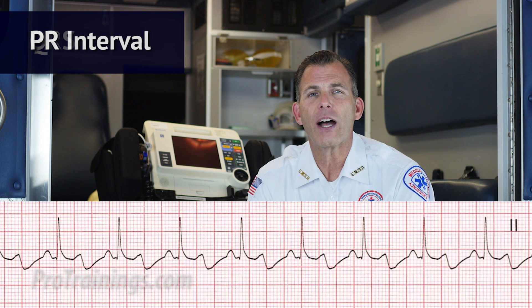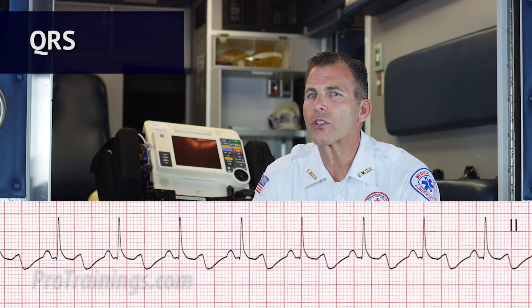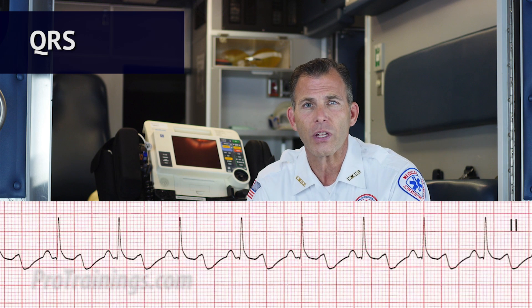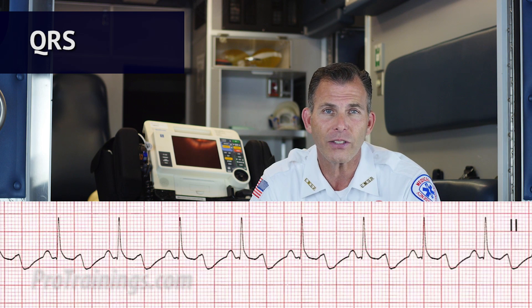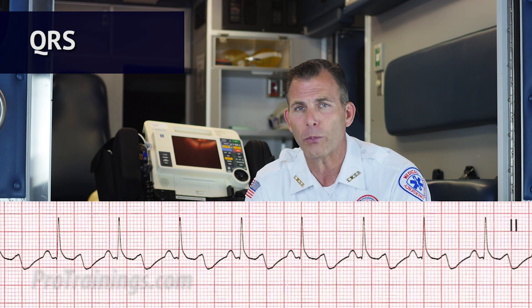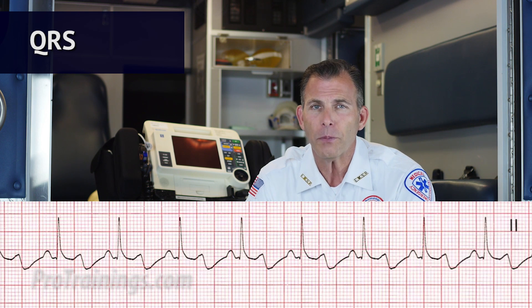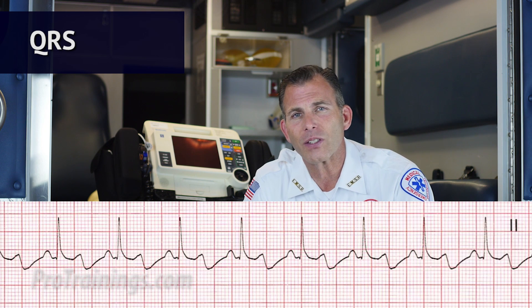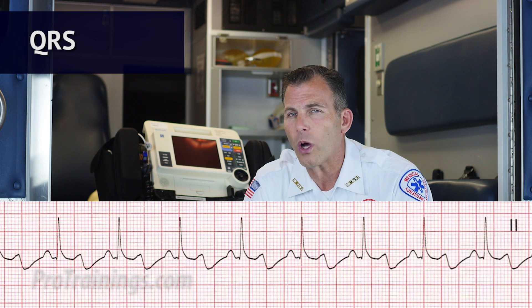So now we move on to the QRS complex of the ECG. Is the QRS interval less than 0.12 seconds? Yes it is. As long as the QRS fits within two small boxes and no larger than three small boxes, the QRS is within normal range. Is the QRS wide or narrow? In this case the QRS is narrow. Are the QRS complexes similar in appearance? We can see that each one looks similar.